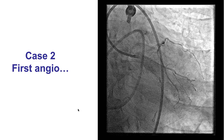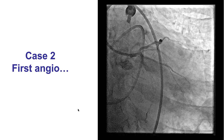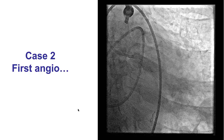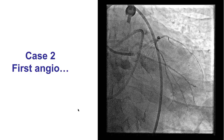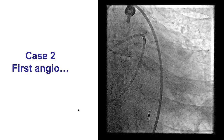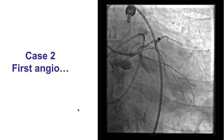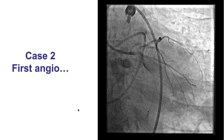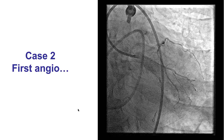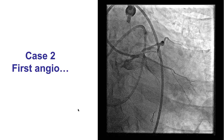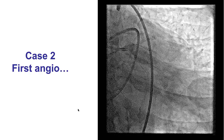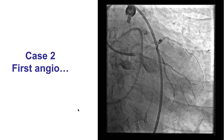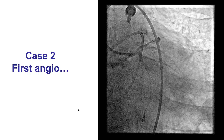We decided to use a femoral approach. Given that there was a proximal and mid-left main lesion, we decided to wire immediately upon engagement to minimize pressure dampening and potential hemodynamic compromise. We decided to not use hemodynamic support because the patient had normal left ventricular systolic function and wedge pressure was within normal limits.